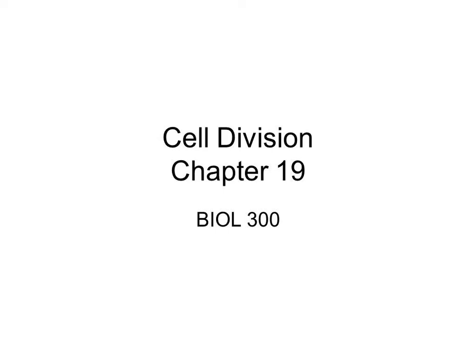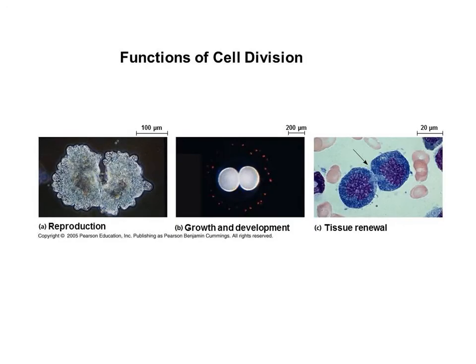In this lecture, we're going to cover cell division. If we think of the different functions of cell division for organisms on this planet, one of the first functions we can think about is for single-cell organisms: division of one cell into two cells leads to reproduction of a whole new organism. This particular diagram is showing you an amoeba at the final division process where one amoeba is divided into two.